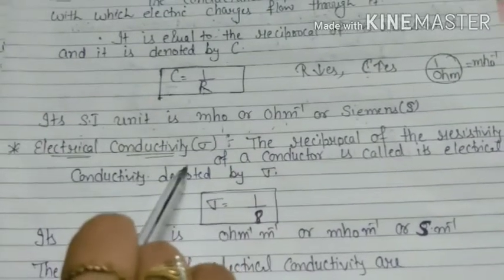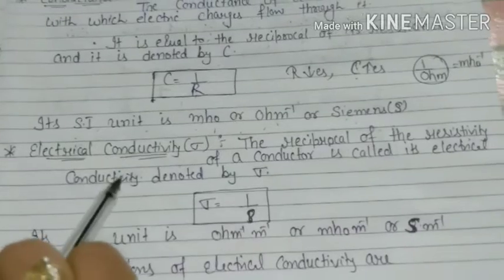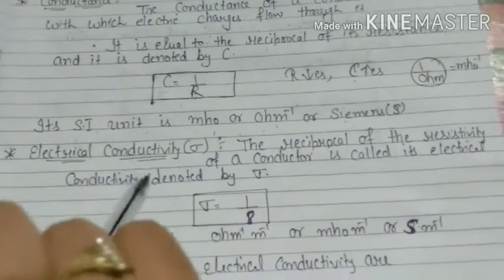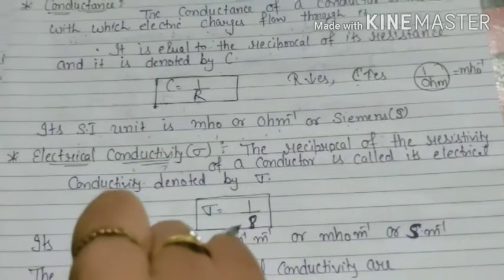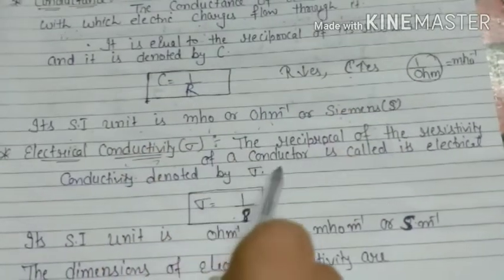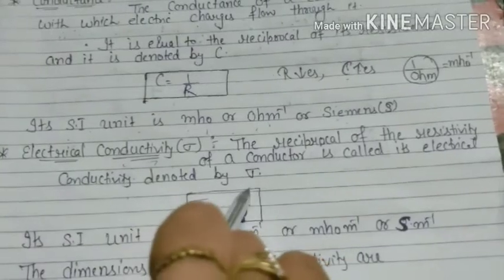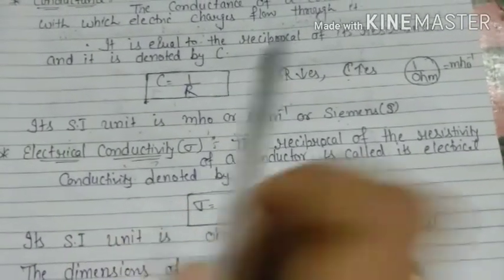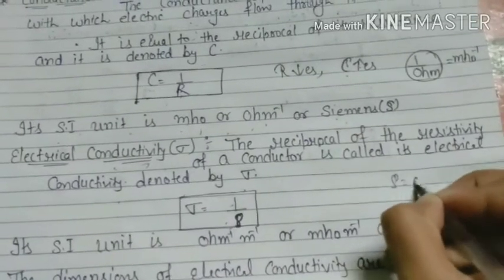Next term is electrical conductivity. हमने last में एक term पढ़ी थी resistivity। Resistivity क्या था: ρ = R × A/L। अब हम पढ़ रहे हैं conductivity, तो conductivity resistivity का reciprocal होगी। इसको हम sigma (σ) से represent करते हैं: σ = 1/ρ। आपको याद होगा ρ की unit ohm·meter थी।